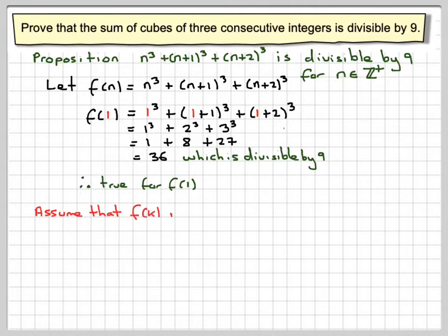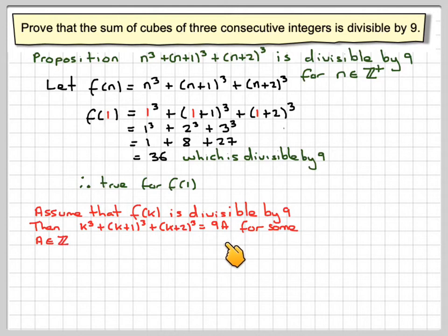Assume that f of k is divisible by 9, i.e. my function, k cubed, k plus 1 cubed, k plus 2 cubed, is equal to 9a for some a being an integer.